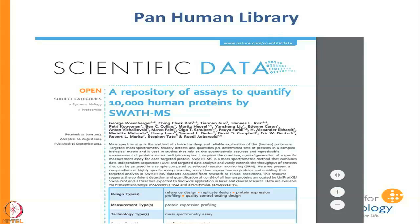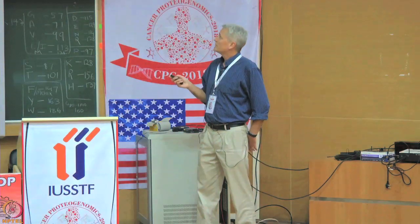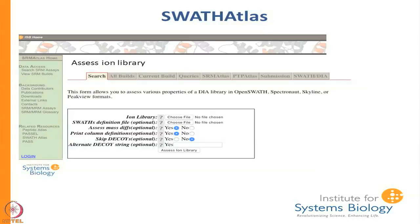The biggest one we have is the so-called pan human library. Basically it was an exhaustive effort done in Rudy Aebersold's lab to sequence about 60 different samples — a number of cell lines, primary tissues, and fractionation techniques — that came up with assays for well in excess of 10,000 human proteins. Using one of these libraries, you can provide information about which proteins or mass ranges you want to use and make a subset library more amenable to your research.